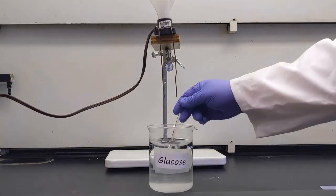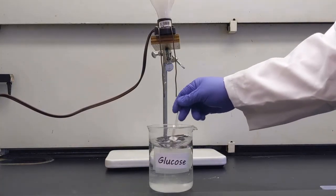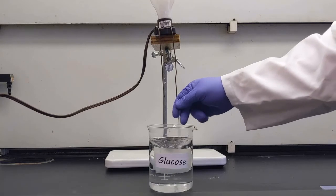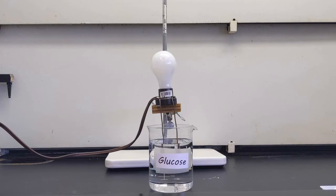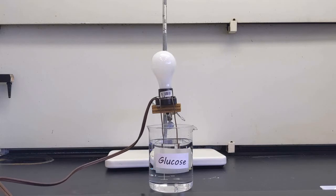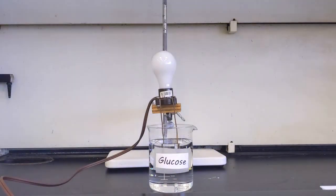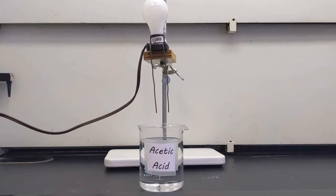Next up is glucose. This is just table sugar, so we're going to dissolve this in here. It takes a little bit longer, but we've got it good and dissolved now. So we'll lower the light bulb in, and now we're going to plug it in. If it lights up, then glucose is going to conduct electricity. What we see here is that glucose does not conduct electricity. Our light bulb doesn't come on.